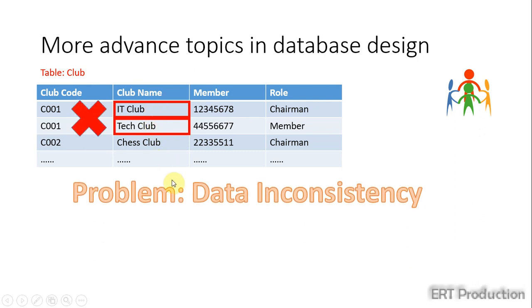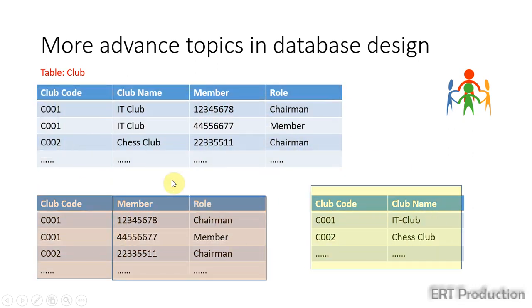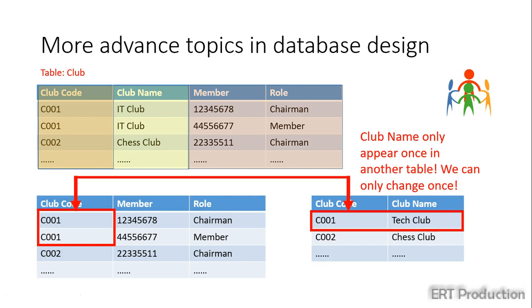Therefore, in order to solve this problem, we will break the table into two related tables like this. And in this case, we only need to change the name of the club once.